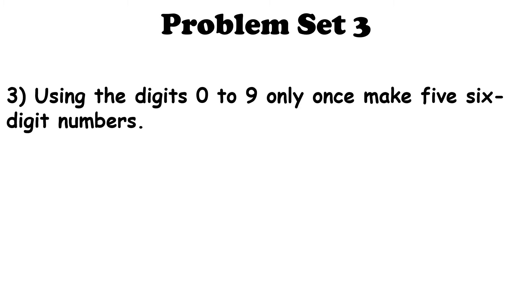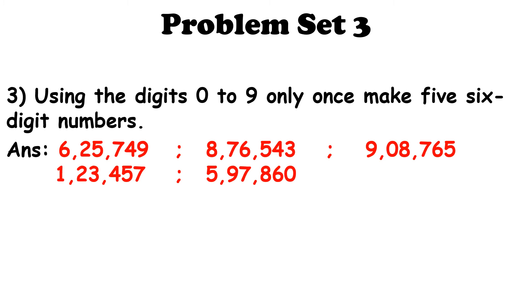Let us now solve the third sum of Problem Set 3: using the digits 0 to 9 only once, make 5 six-digit numbers. Our first number is 6,25,749. The second number is 8,76,543. The third number is 9,08,765. The fourth number is 1,23,457. Our last number is 5,97,860.